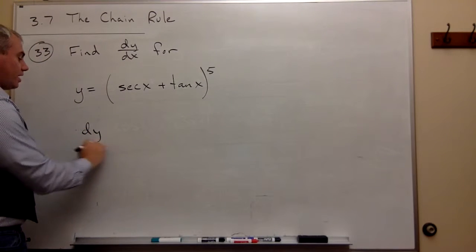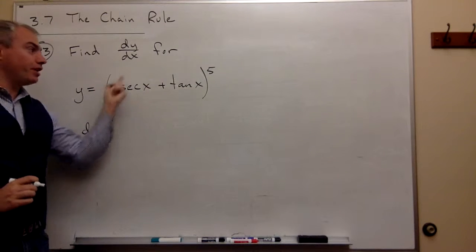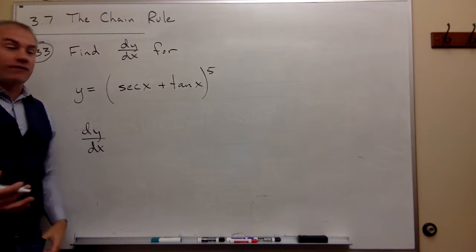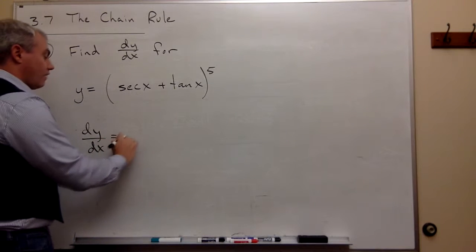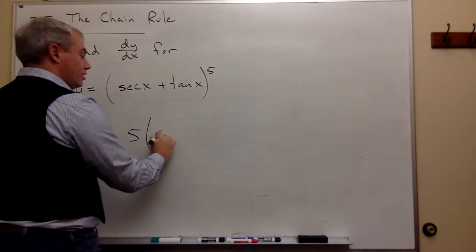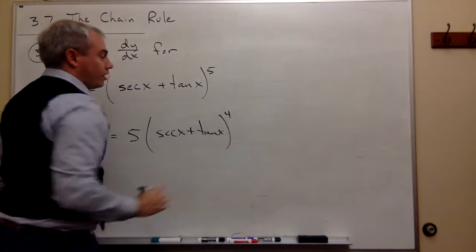So the first thing I want to write down is if I think of this as just something to the fifth, what's the derivative of something to the fifth? It is five somethings, just leave this alone, secant x plus tangent x to the fourth.